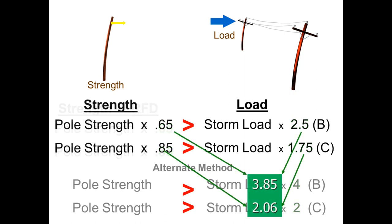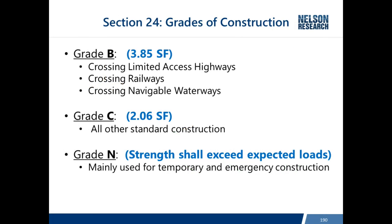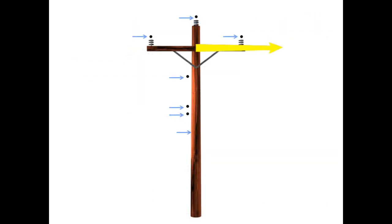Combining the strength factors and load factors gives a combined factor of 3.85 for Grade B and 2.06 for Grade C. When the format was changed to LRFD, these factors were chosen to equate to past practice — so poles are still almost four times stronger in Grade B and two times stronger in Grade C. Grade B is required for crossings of limited-access highways, railways, and navigable waterways, while Grade C covers the majority of distribution construction.